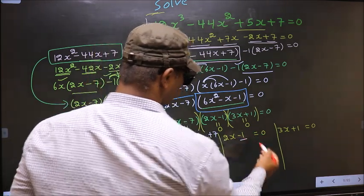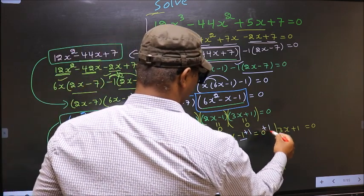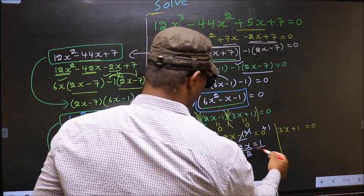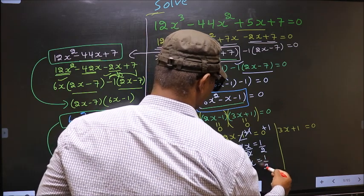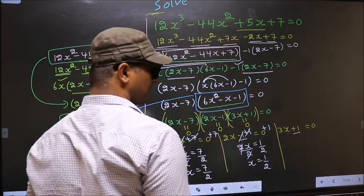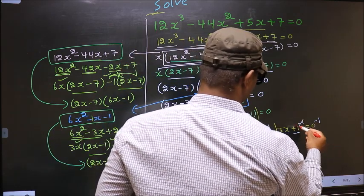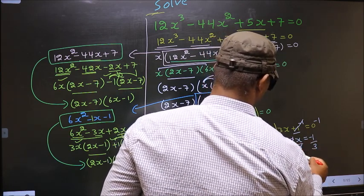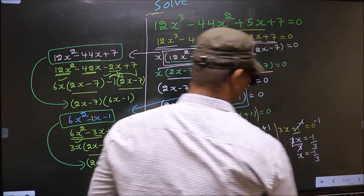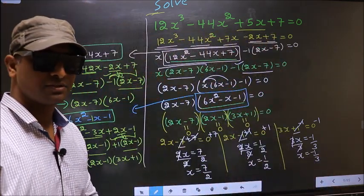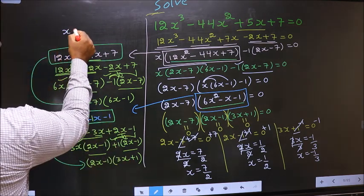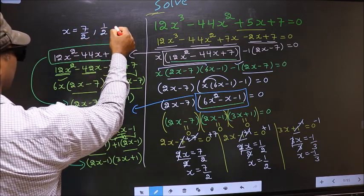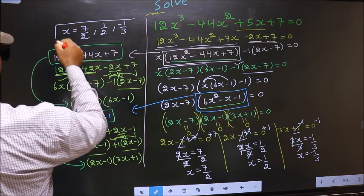From 2x minus 1 = 0: add 1 to get 2x = 1, then divide by 2 to get x = 1/2. From 3x plus 1 = 0: subtract 1 to get 3x = minus 1, then divide by 3 to get x = minus 1/3. So the x values we got are 7/2, 1/2, and minus 1/3. This is our answer.